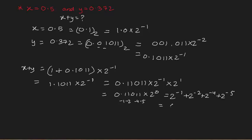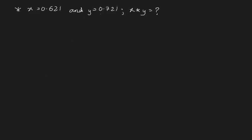So we are left with 0.84375. We can check the answer by calculating it manually: 0.5 + 0.372 gives something close to 0.84375. Now let's move on to the multiplication example.